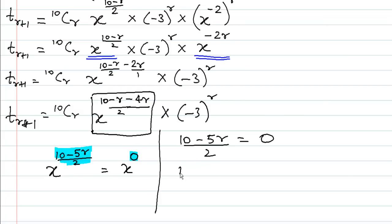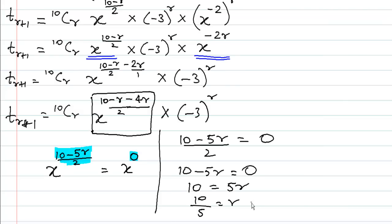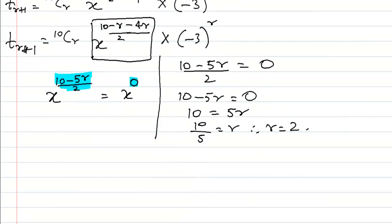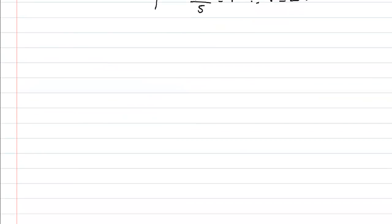Cross multiplying: 10 − 5r = 0, which gives 10 = 5r, so r = 10/5 = 2. We have found the value of r. Let us substitute.